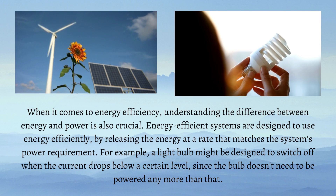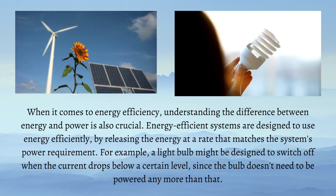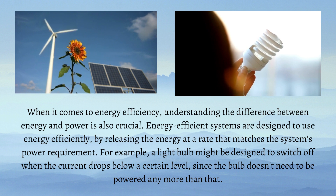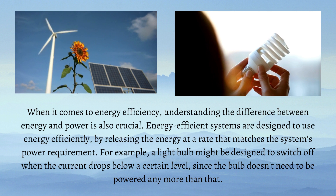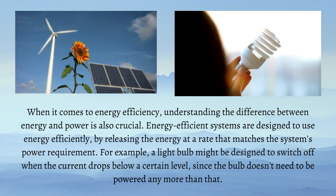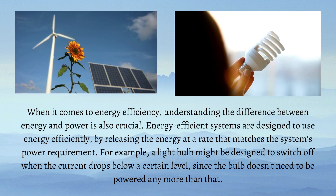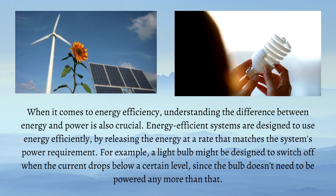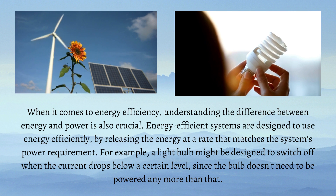When it comes to energy efficiency, understanding the difference between energy and power is also crucial. Energy efficient systems are designed to use energy efficiently, by releasing the energy at a rate that matches the system's power requirement. For example, a light bulb might be designed to switch off when the current drops below a certain level, since the bulb doesn't need to be powered any more than that.